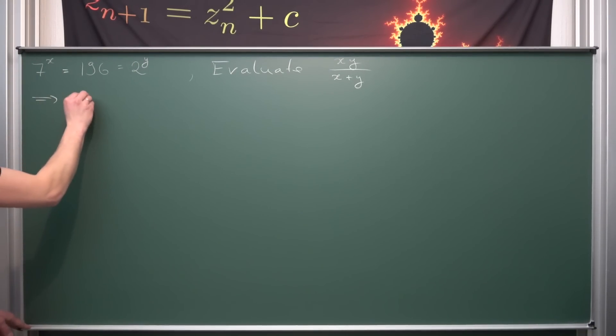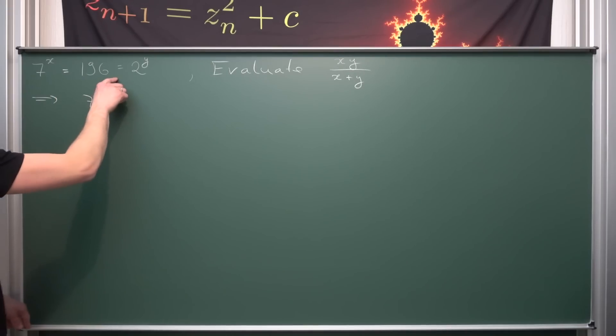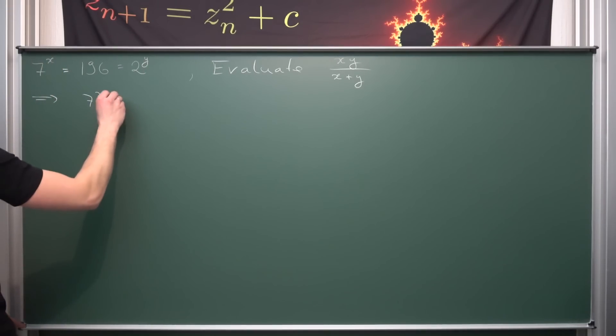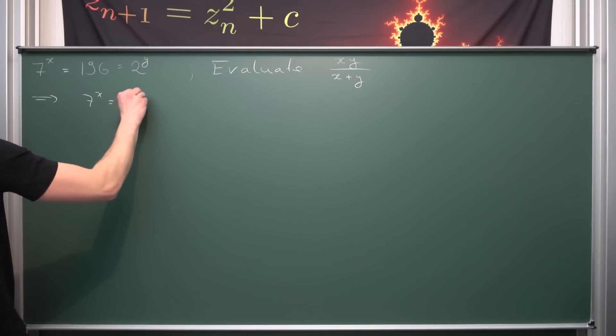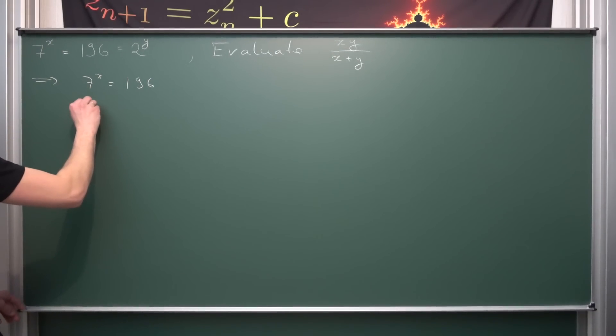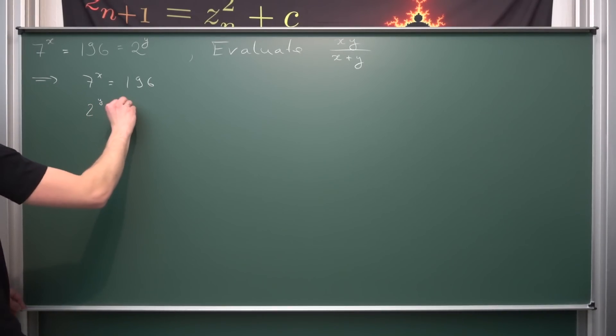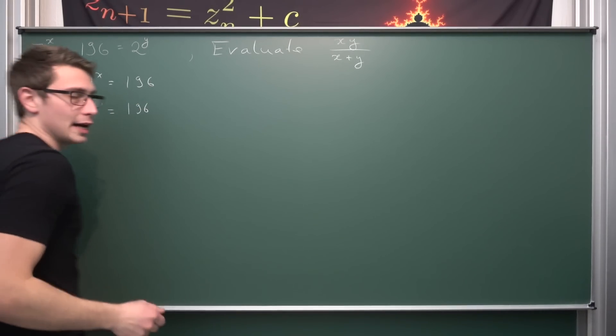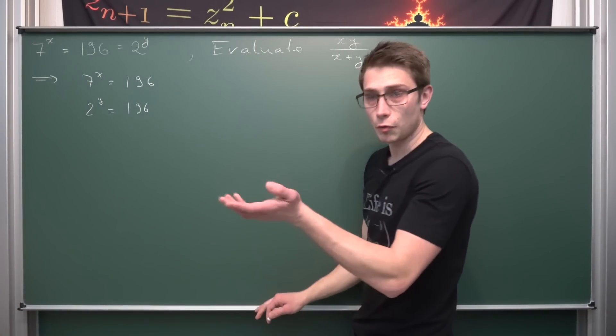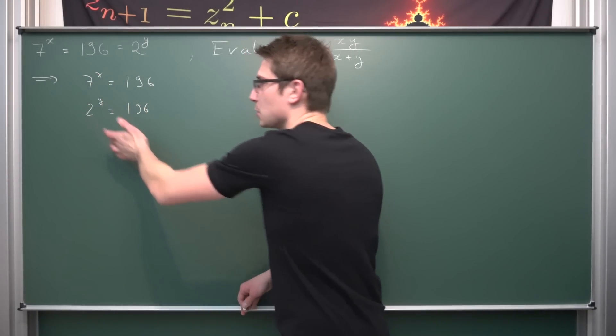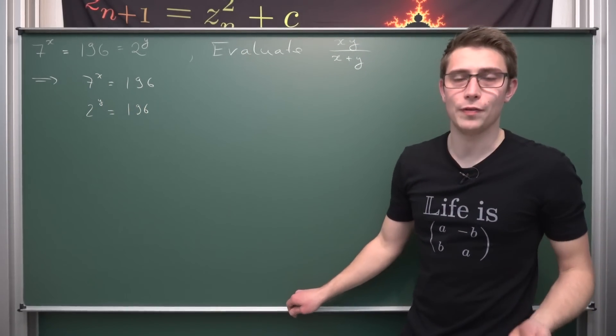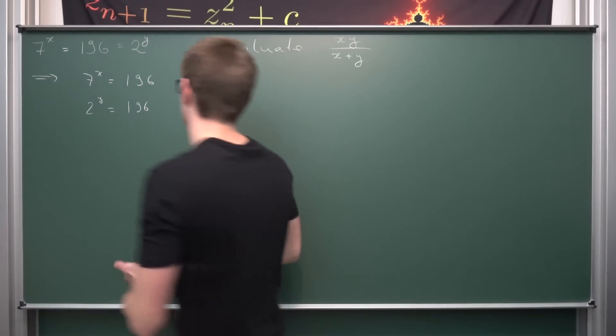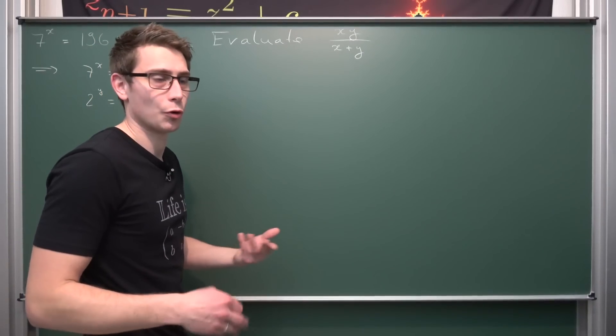What I mean by that is we have two equations here because we have two equal signs. So 7 to the x power is equal to 196 and also 2 to the y power is equal to 196. Now what we can do is solve respectively for either 7 and 2 by taking the 1 over x or 1 over y power. Meaning that's the x root or the y root.